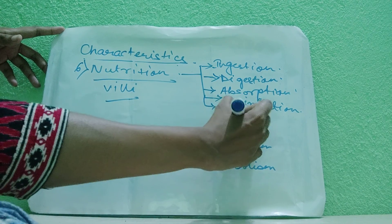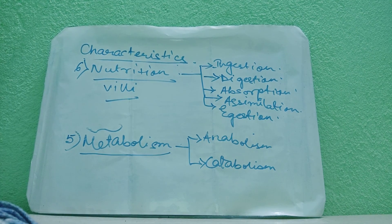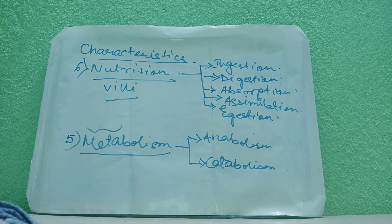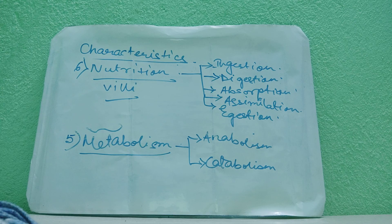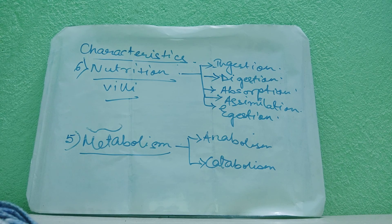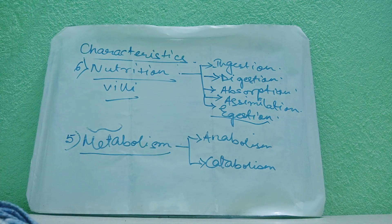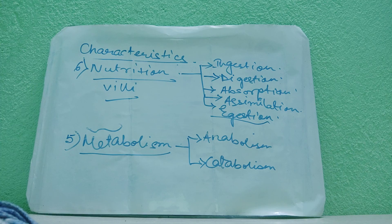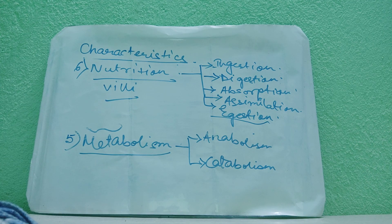The fifth step is ejection. Ejection means removal of waste substances — the food particles which cannot be digested further are regarded as waste substances and should be eliminated out from the body. That is regarded as ejection. So these are the five steps of nutrition. I am completing my video here. In the next video I will continue with the next part of the chapter. Thank you.